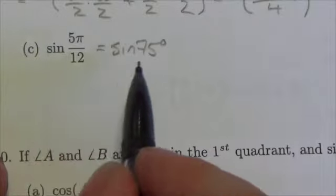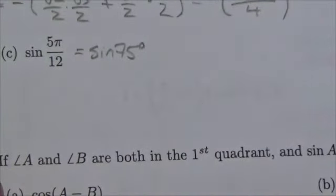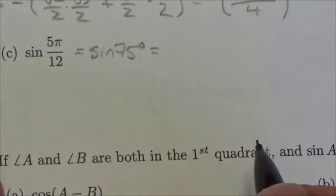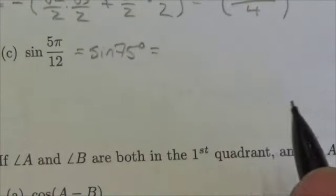Sine of 5π over 12. Well, 5π over 12 is just 75 degrees. Okay. Now, that's already my reference angle. It's already an acute angle. Okay, this first quadrant. Perfect.